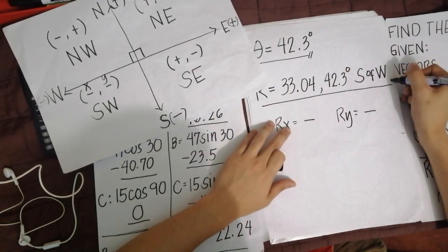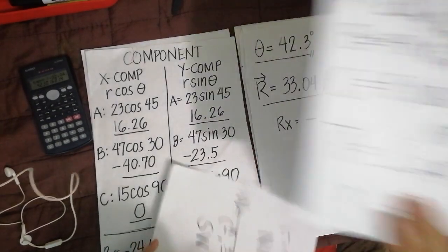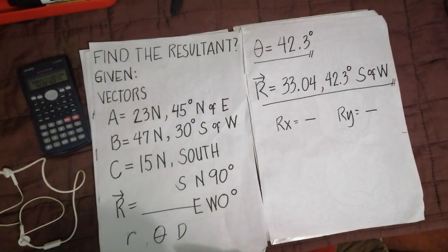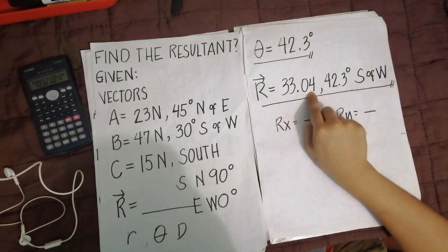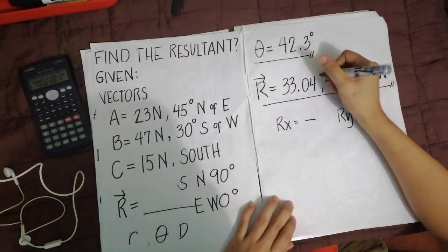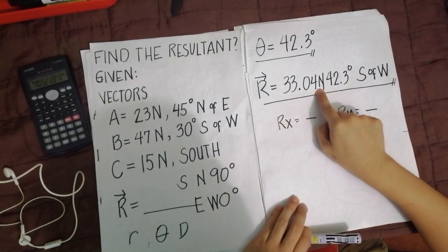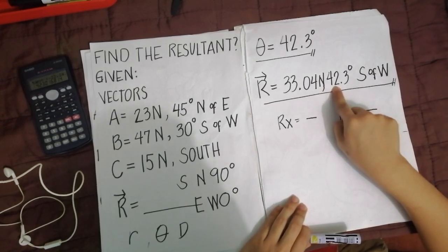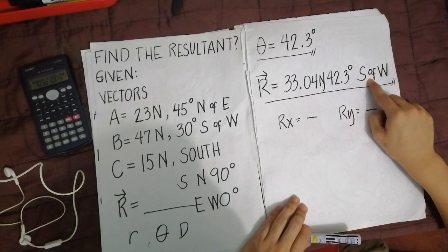So, lagay nandito south of west. Ito yung pinaka-final answer natin. So, the final answer of this given vectors pag in-add sila is equal to 33.04. Wait lang. Kailangan pa rin ng unit. The unit is this. Newton. Parang kung deto. 33.04 Newton, 42.3 degrees. Ito yun. Data. South of west. South of west dahil yun dito. Dahil dito. rx, ry.